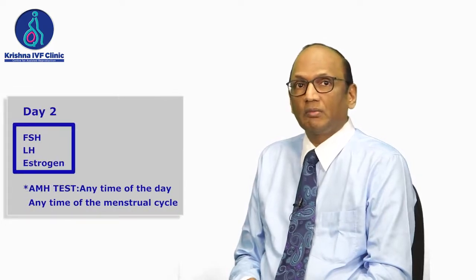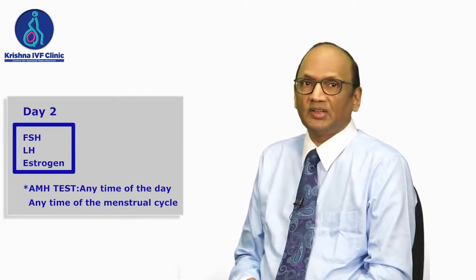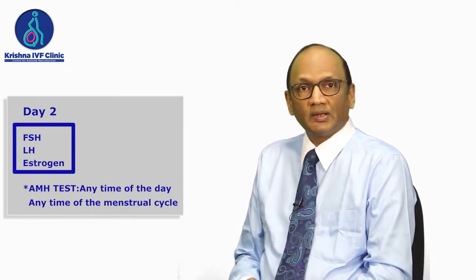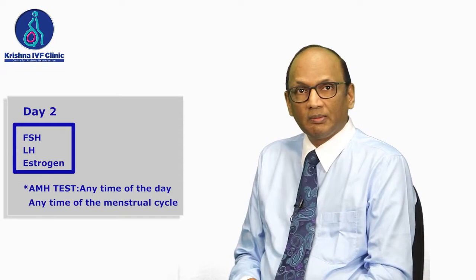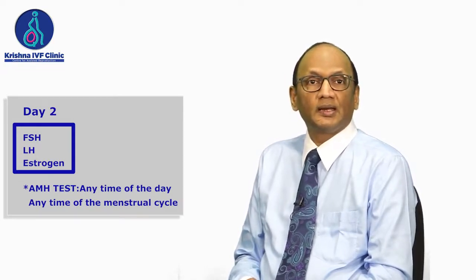In the current decade, ovarian estimations have become very accurate and they do not have day-to-day variability — it can be done at any time in the menstrual cycle. Before the advent of AMH, ovarian reserves were checked on the second day of the menstrual cycle with FSH, LH, and sometimes estrogen levels. With AMH, the concept of ovarian testing has become simpler, more reliable, and much more accurate.